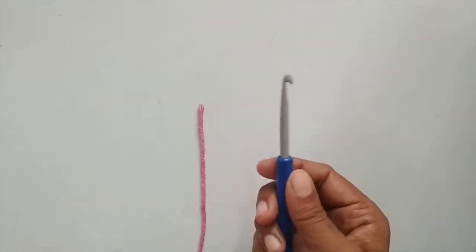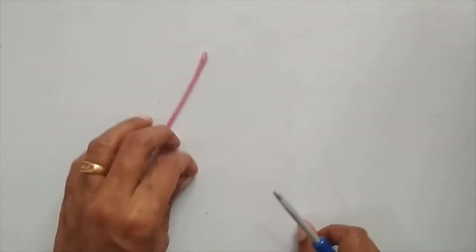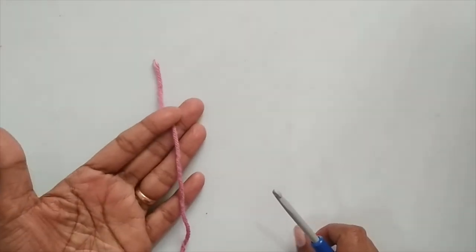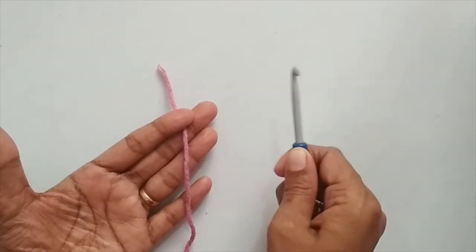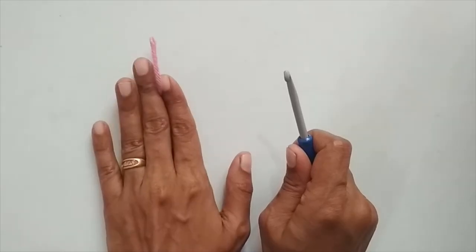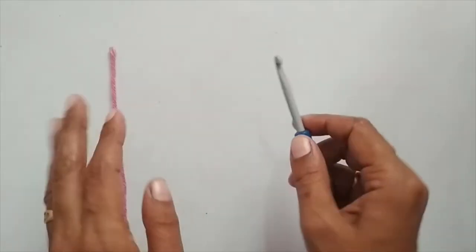In crochet, you hold the hook in your dominant hand and the yarn in your non-dominant hand. Since I am a right-hand crocheter, I'll hold my hook in my right hand and the yarn in my left hand.